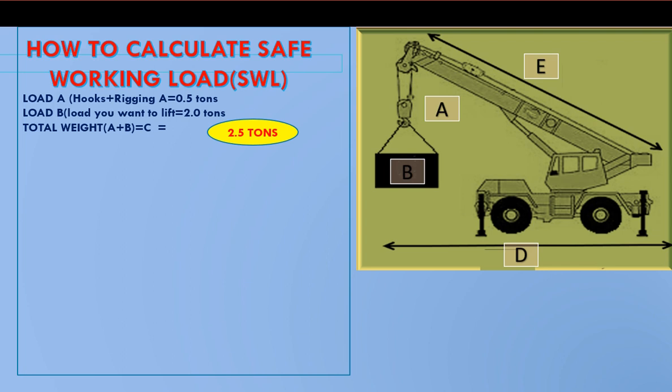Now we will check the safe working load limit of the crane. The boom length D will be 70 meters, and the maximum radius E with this boom angle would be 40 meters.